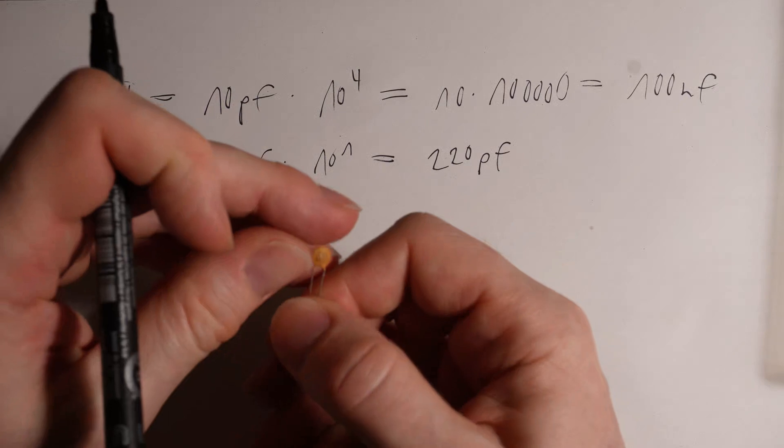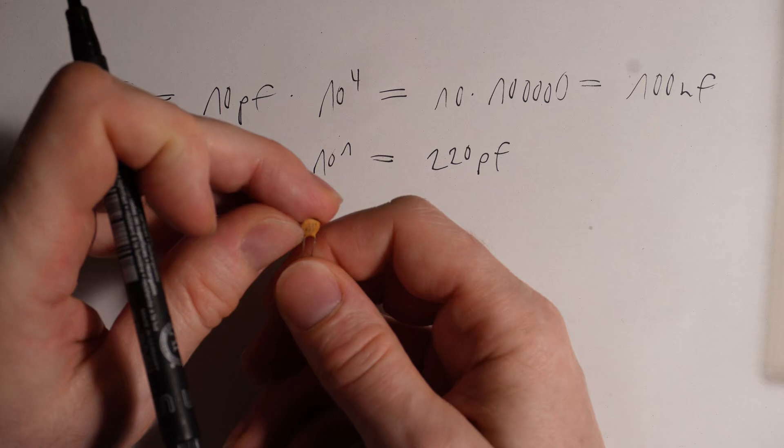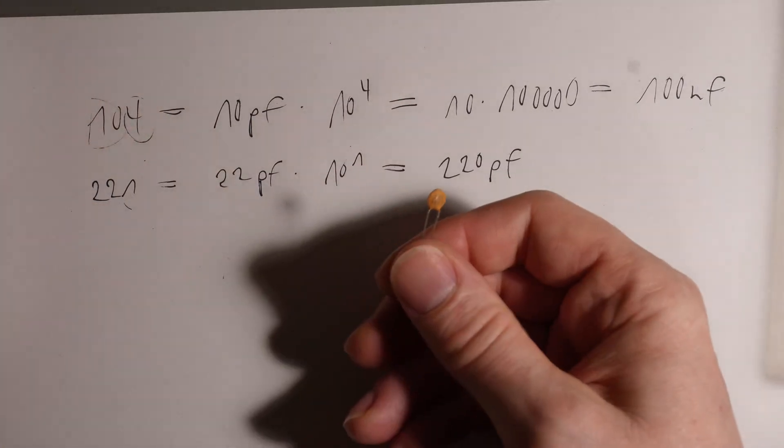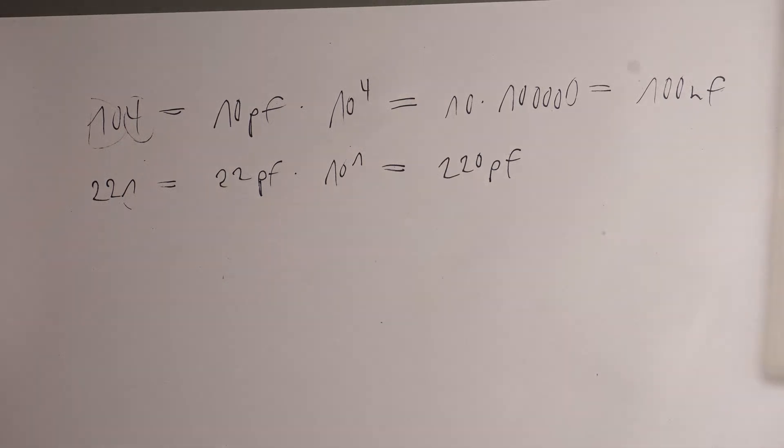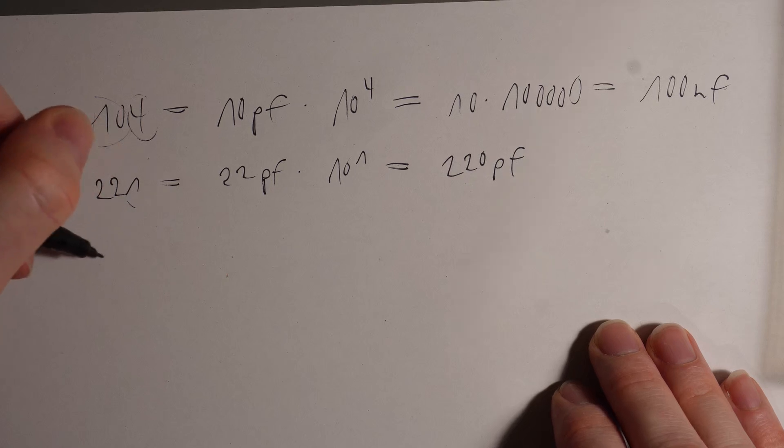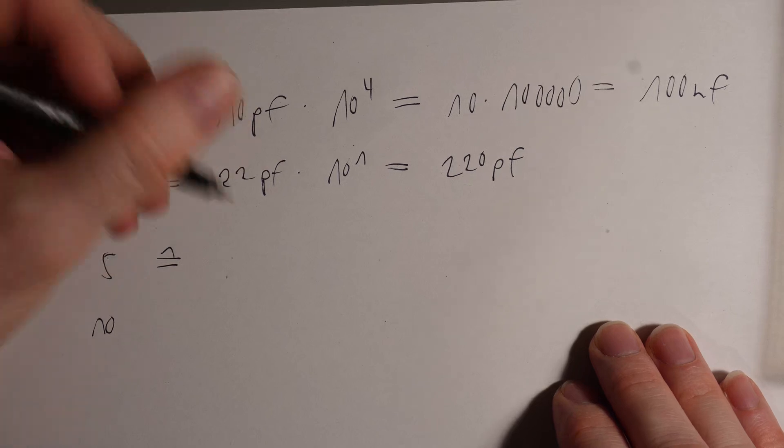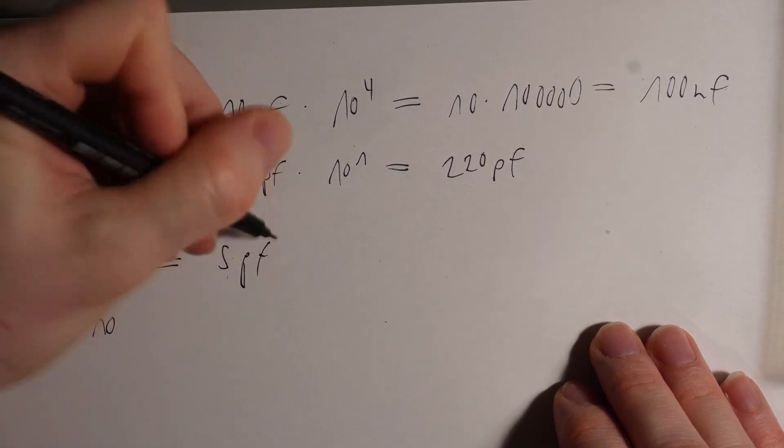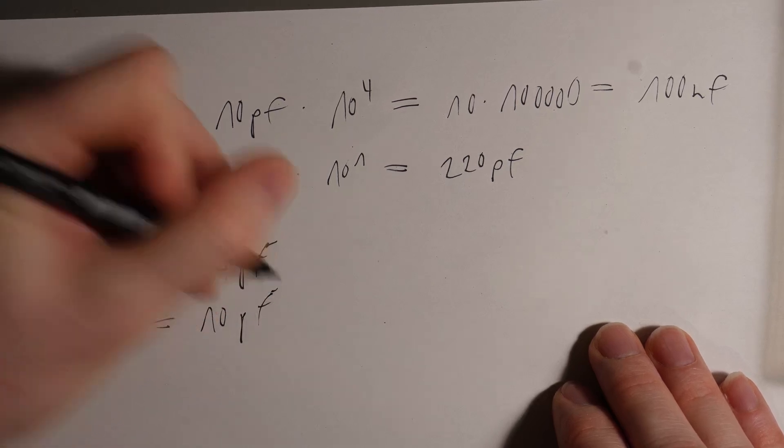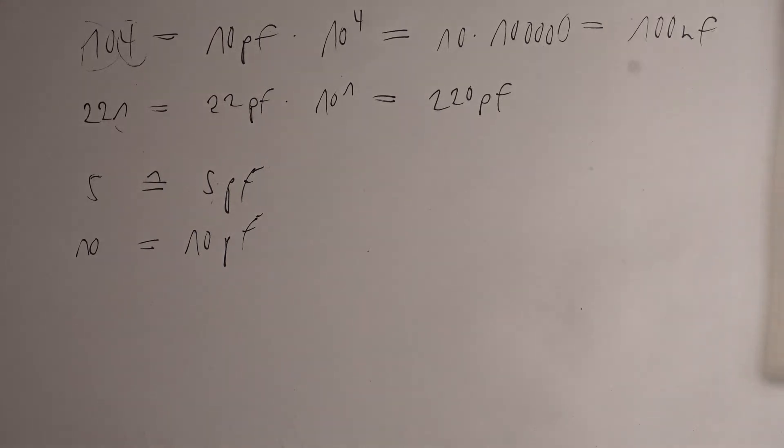On this one here you also have like a voltage. So this is 100 volts I think here. This really depends on the package. If you only have like one or two digits like 5 or 10 or something, this would be like 5 picofarads or 10 picofarads. This is really straightforward. Let's talk a bit about the applications.